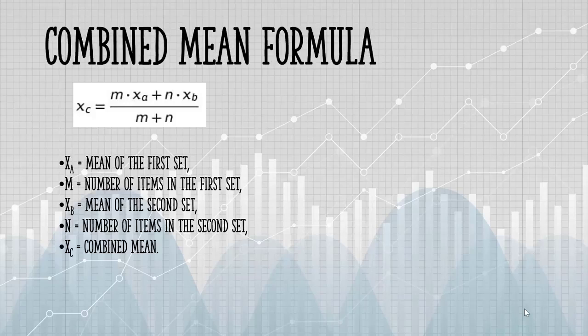The formula for the combined mean has a few different parts to it. X sub A is the mean of the first set, M is the number of items in the first set, X sub B is the mean of the second set, and N is the number of items in the second set.